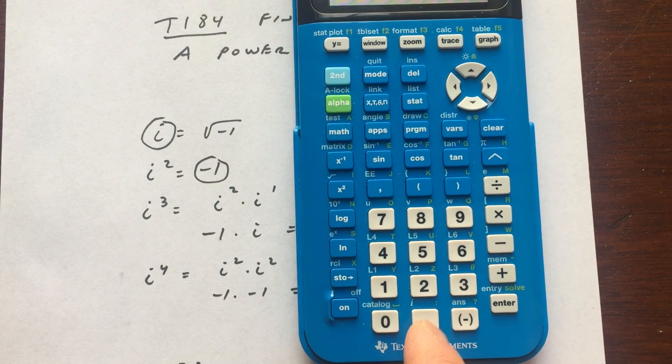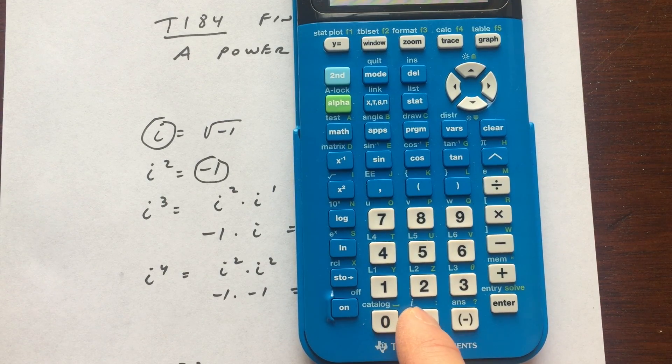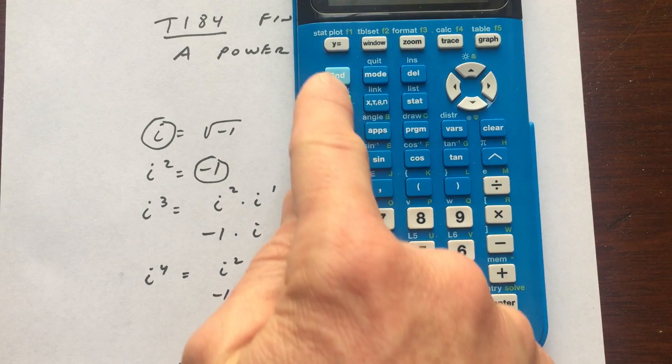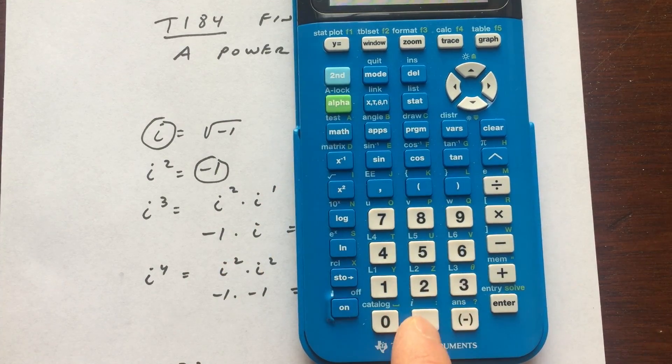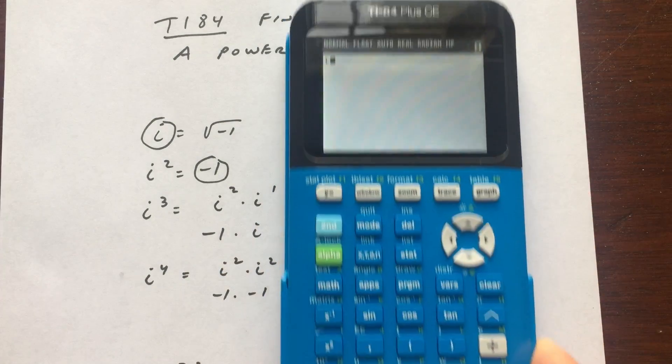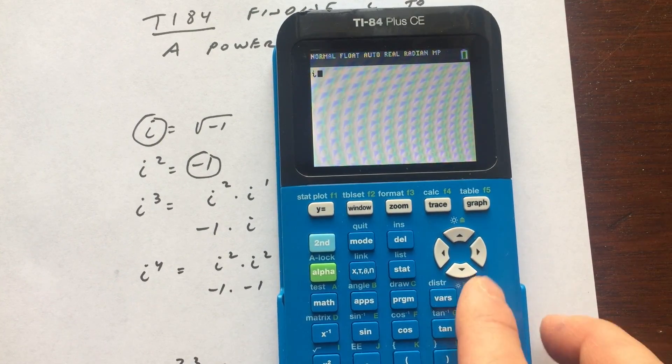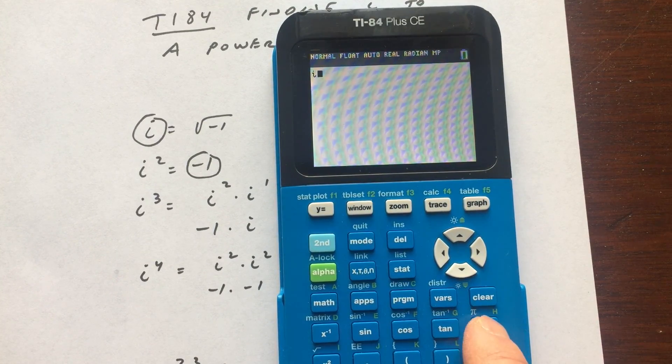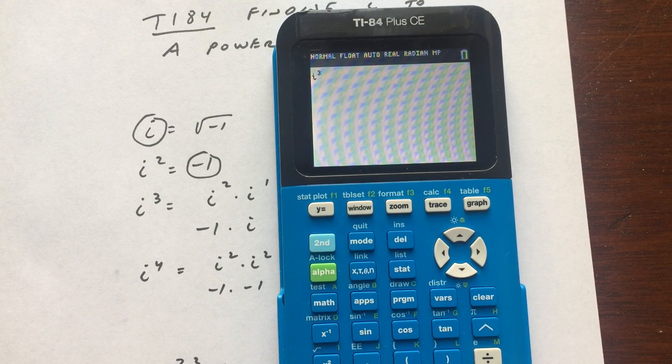See right here where the decimal point is at the very bottom? See it in blue and light blue above the i? What we're going to do is we're going to press 2nd i. So you can see there's your i. And I'm going to use the caret key over here right underneath the clear. So caret 3, so that's the third power.